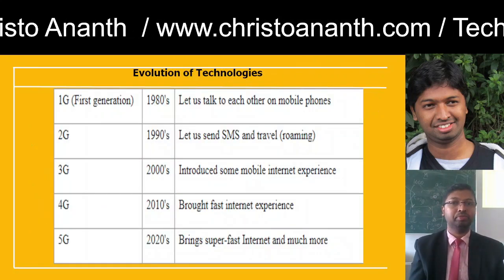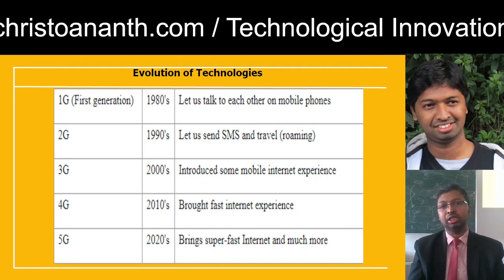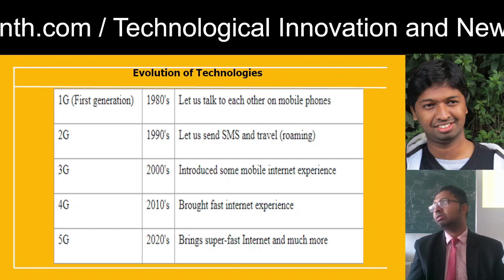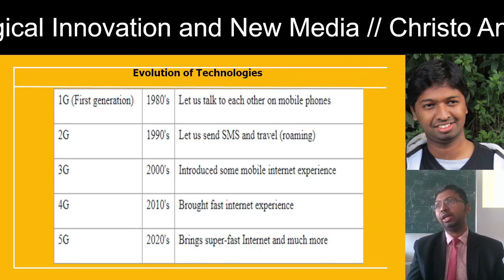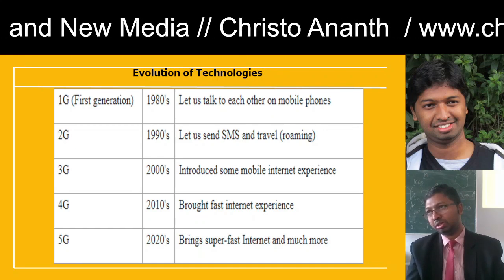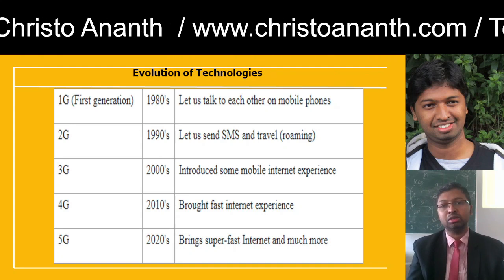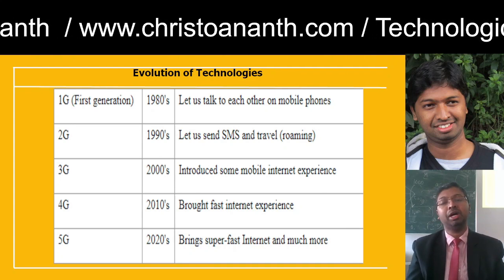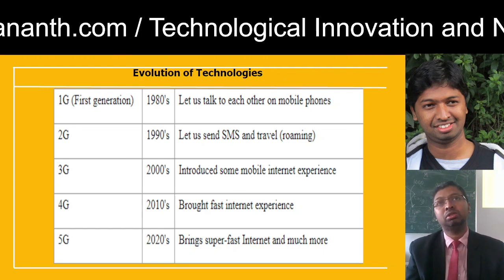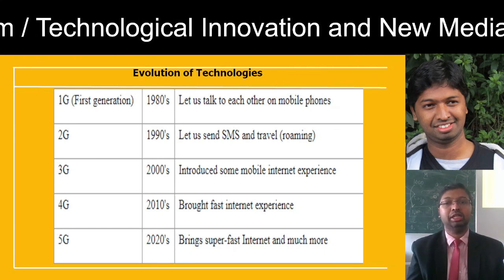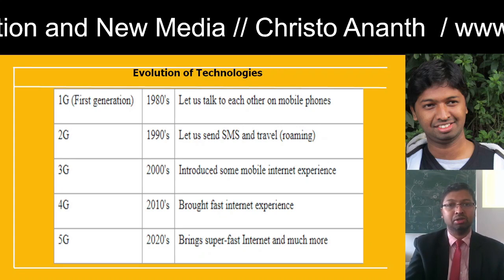This is the evolution of technologies. First came 1G in the 1980s — you could talk through mobile phones. Then 2G in the 1990s introduced SMS and roaming support. 3G came in the 2000s with a mobile internet experience. 4G arrived around 2010 with a faster internet experience, and then 5G came with a super fast internet experience.